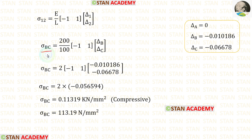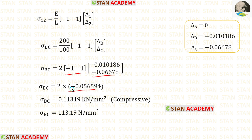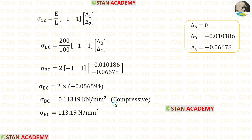Now let us find the stress for bar BC. The length of BC is 100. Applying the values of delta B and delta C and multiplying the matrices, then multiplying by 2, gives sigma BC as a negative value, indicating compressive stress. Removing the kilo prefix and multiplying by 1000, we finally get sigma BC equal to 113.19 N per mm square (compressive).